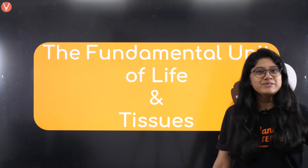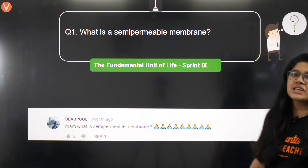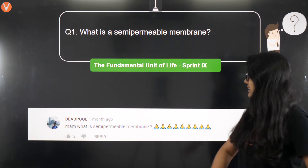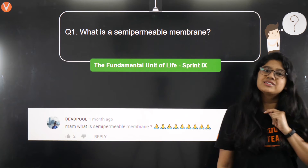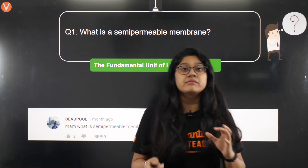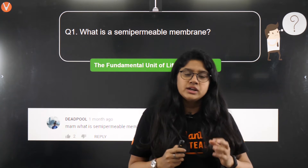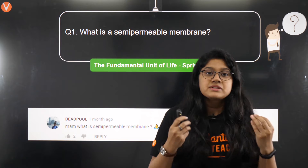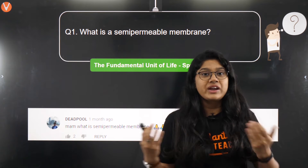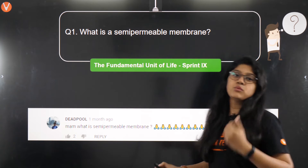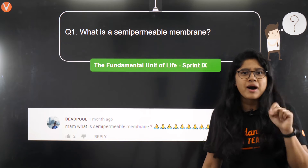Let's start our class with a few questions which have been asked by you people, and your name will be featured here. Deadpool has asked: 'Ma'am, what is a semi-permeable membrane?' Semi-permeable membrane is our plasma membrane which allows few molecules to move in and out. In simple language, plasma membrane is a selectively semi-permeable membrane which allows molecules to move in and outside of the cell.